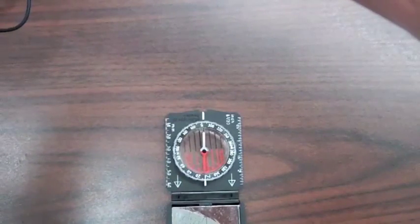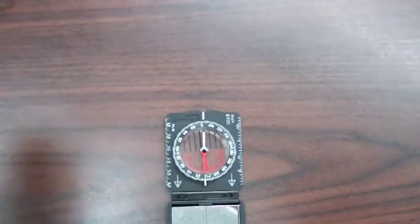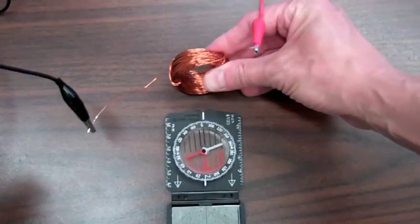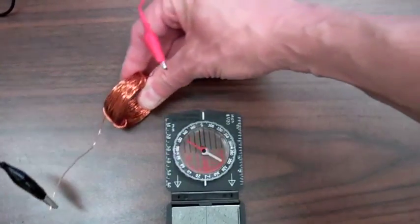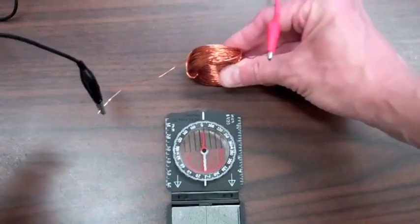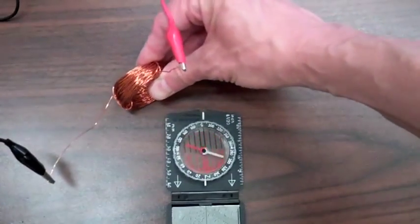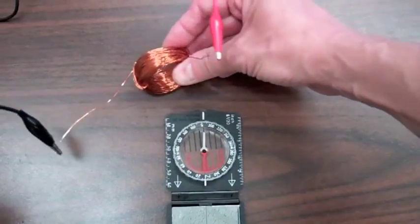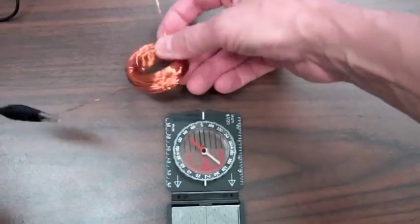Now this current flowing through the coil will generate a magnetic field such that the coil will act just like the magnet. So we see the compass needle is going to follow the coil just like it did the magnet, and if I take and flip the coil, the compass needle will flip just like it did with the magnet.